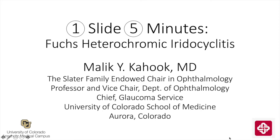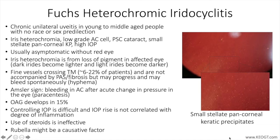This is Malika Hook from the University of Colorado covering Fuchs heterochromic iridocyclitis in this edition of One Slide in 5 Minutes. Fuchs heterochromic iridocyclitis, also known as Fuchs heterochromic cyclitis, presents as a chronic unilateral uveitis in young to middle-aged people with no race or sex predilection.